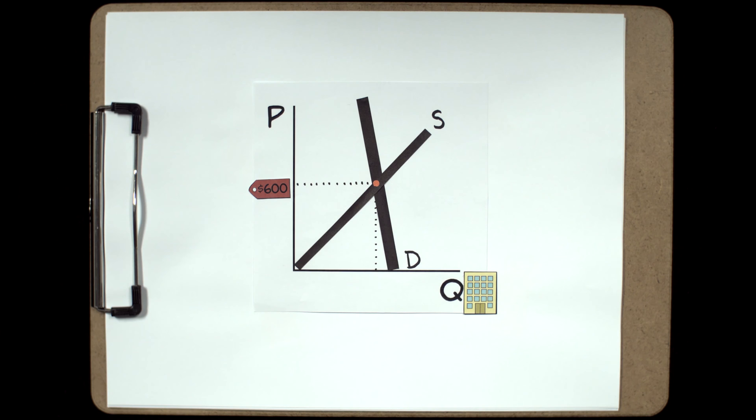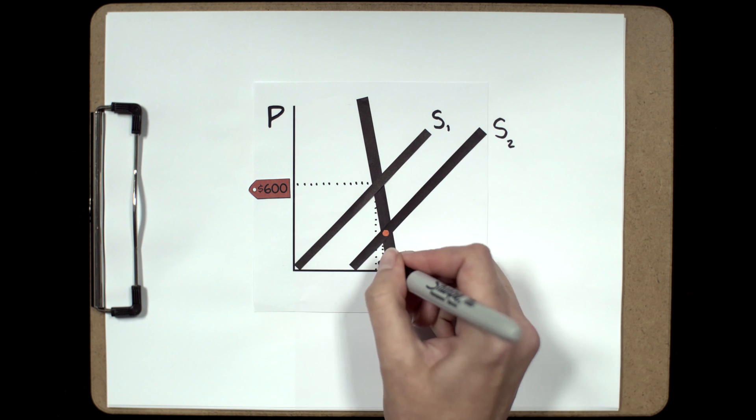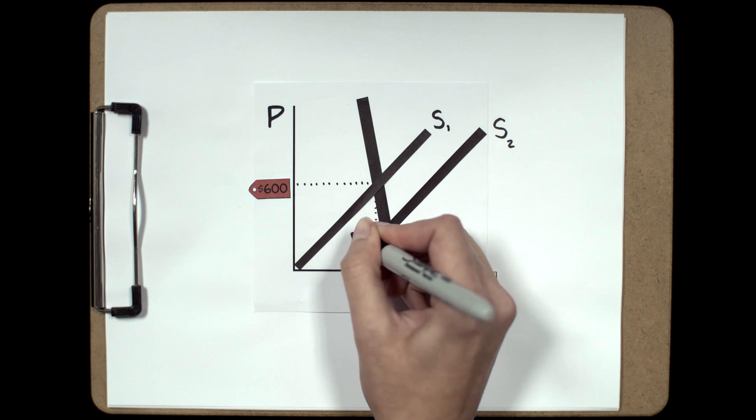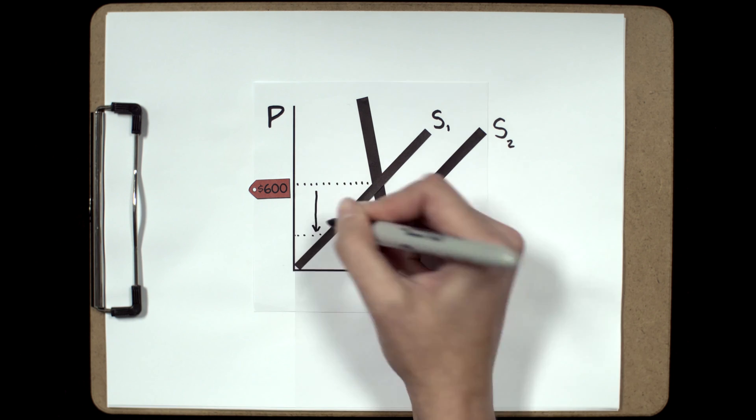So housing increases in the area and supply shifts out. Now what happens to demand? It barely budges. Perhaps more surprisingly, the price falls by quite a bit.